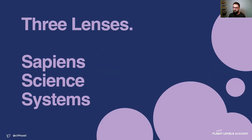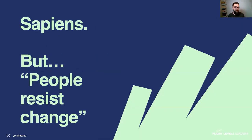Sapiens being the human side, science being how we validate whether the things we're doing are working or not, and systems being how the parts all fit together and how things interact. So let's start with the actual content.